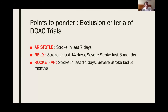Look at the major DOAC trials. ARISTOTLE for apixaban excluded stroke patients in the last 7 days. RE-LY excluded stroke patients in the last 14 days or severe stroke patients — same for ROCKET-AF for rivaroxaban. Practically, these DOAC trials excluded exactly those stroke patients for whom we are trying to justify early anticoagulation. So the data from these major three trials cannot directly be extrapolated to the population we are talking about.